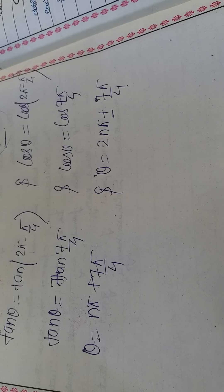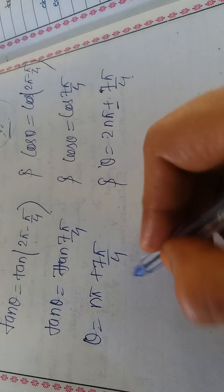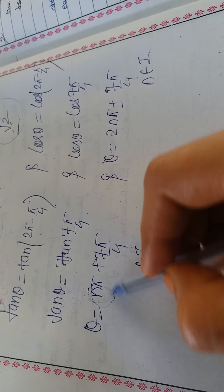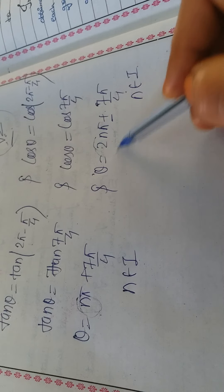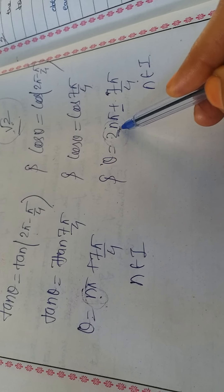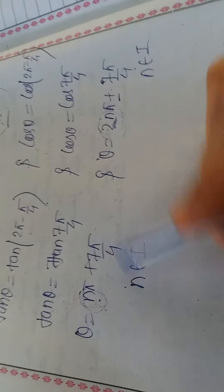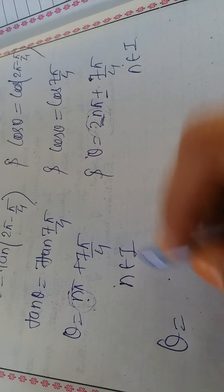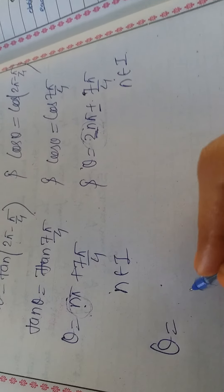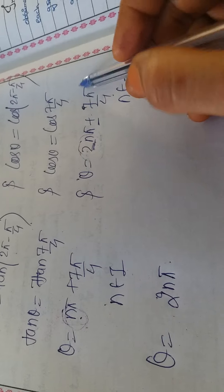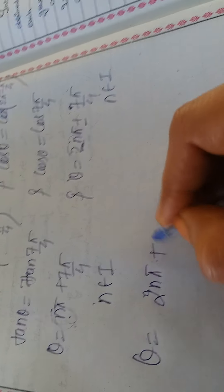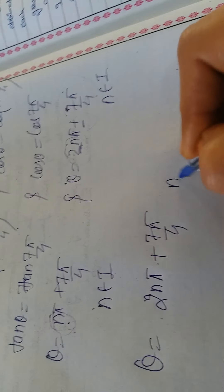To find the common solution: nπ covers all integers, while 2nπ covers only even integers. The common set between all integers and even integers is even integers, so we use 2nπ. Also, the tan formula has only '+' while cos has '±', so the common sign is '+'. Therefore the most general common solution is θ = 2nπ + 7π/4, n ∈ ℤ.